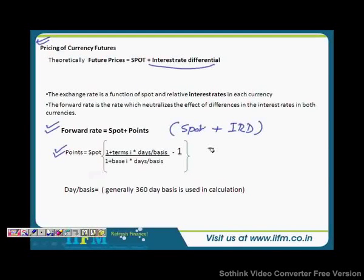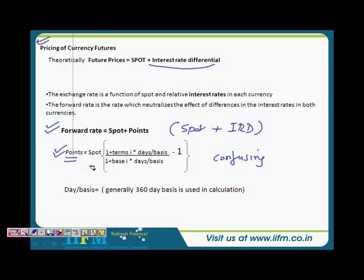This is the basic formula to calculate the forward rate. If it sounds confusing, don't worry. What we've done is simple: a forward rate is nothing but spot plus IRD. IRD is called the points, and there's a formula to calculate it. We'll explain this further with an example, so stay with us and you'll completely understand how this works.